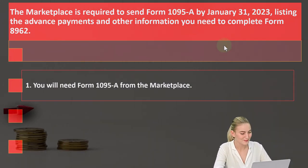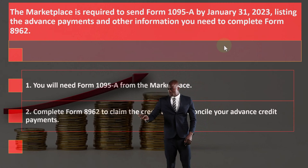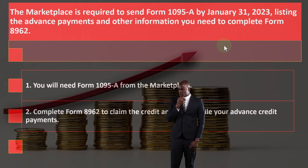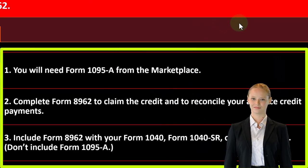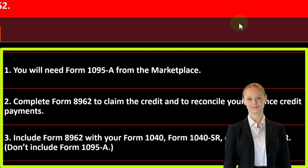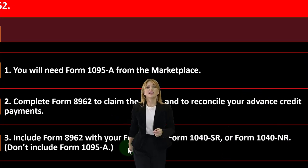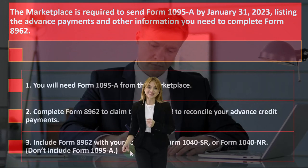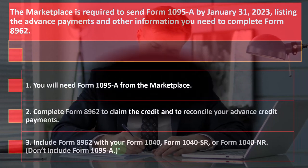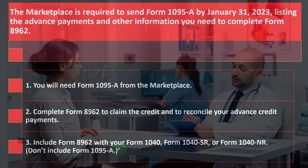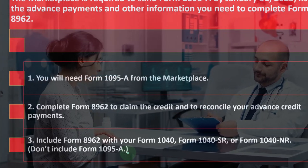For lower income tax returns, you do this comparison to calculate the credit versus the lowering of premiums, to determine if there's any added credit still to be applied, or if they overtook the credit and have to pay it back. To complete Form 8962 to claim the credit and reconcile your advance credit payments, include Form 8962 with your Form 1040, 1040-SR, or 1040-NR. Don't include Form 1095-A — it's documentation similar to a 1099 or W-2, needed to fill out that required piece of the tax return if you're participating in the marketplace.